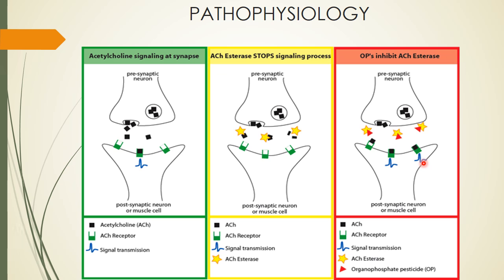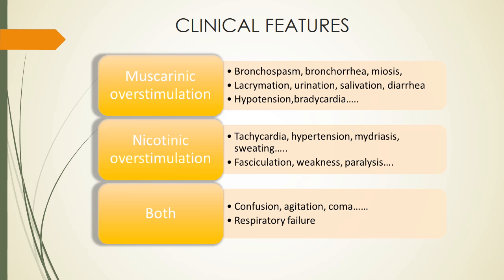Clinical manifestations of organophosphate poisoning include muscarinic overstimulation — bronchospasm, increased bronchial secretions, miosis, lacrimation, urination, salivation, diarrhea, hypotension, and bradycardia. Nicotinic overstimulation causes tachycardia, hypertension, mydriasis, sweating, fasciculation (twitching of muscles), weakness, and paralysis. If both occur together, the patient may develop confusion, agitation, coma, and respiratory failure.